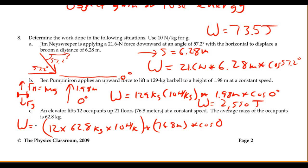Cosine 0 is 1 so the work done is 12 times 62.8 times 10 times 76.8 times 1. With three significant figures we're looking at 579,000 joules worth of work, a significant amount of work.